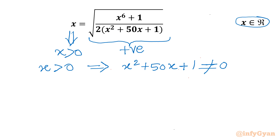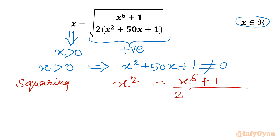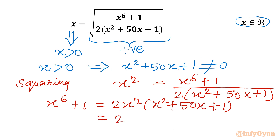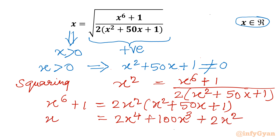Let us consider squaring the original equation. We get x² = (x⁶ + 1) / (2x² + 50x + 1). Cross multiplying gives x⁶ + 1 = 2x²(x² + 50x + 1). Expanding the right hand side: 2x⁴ + 100x³ + 2x². The left hand side is x⁶ + 1.